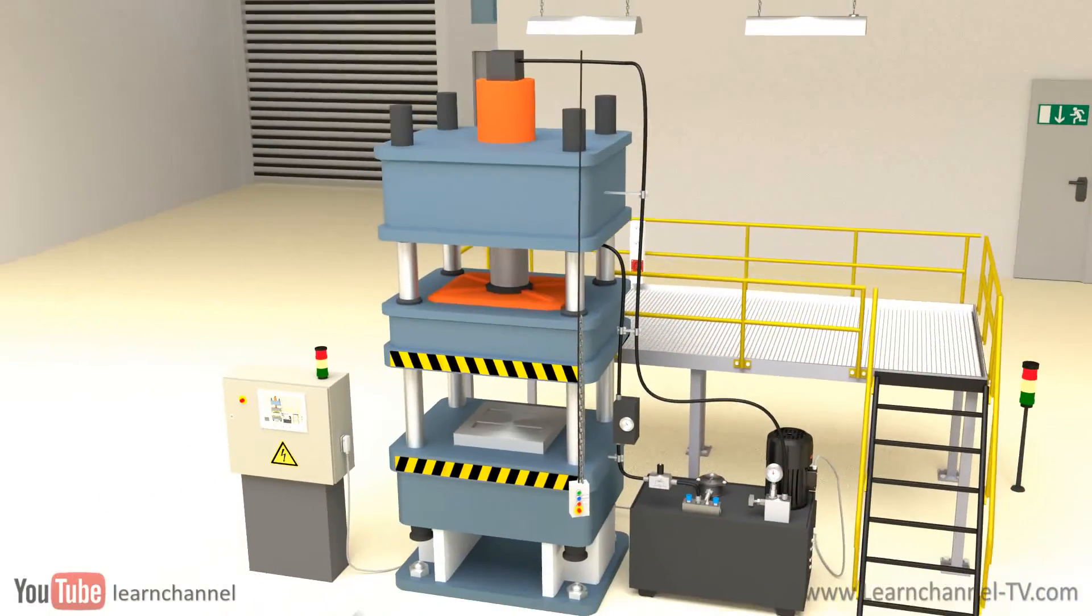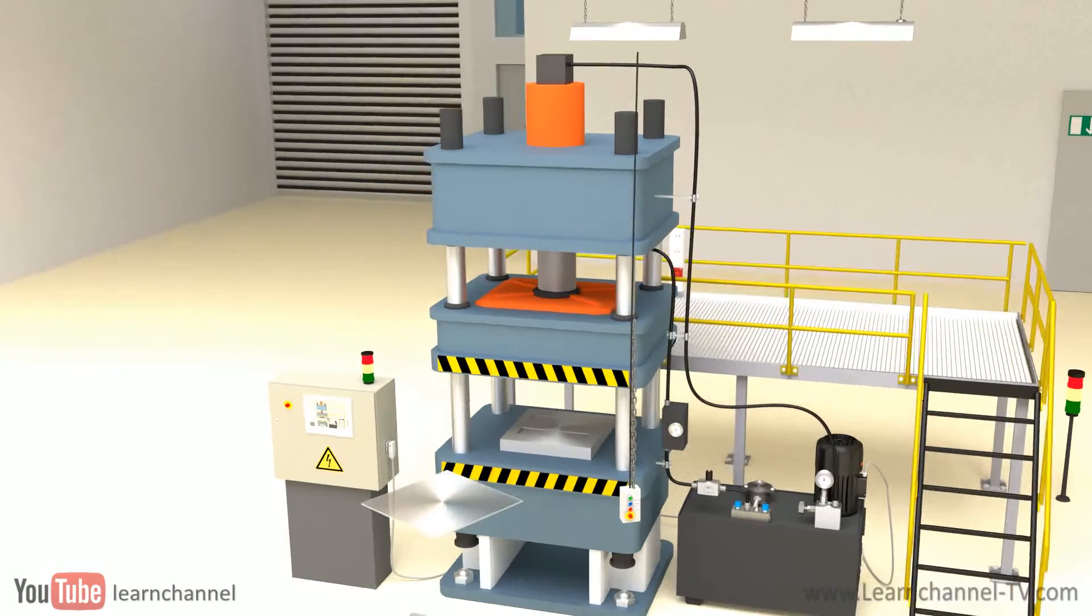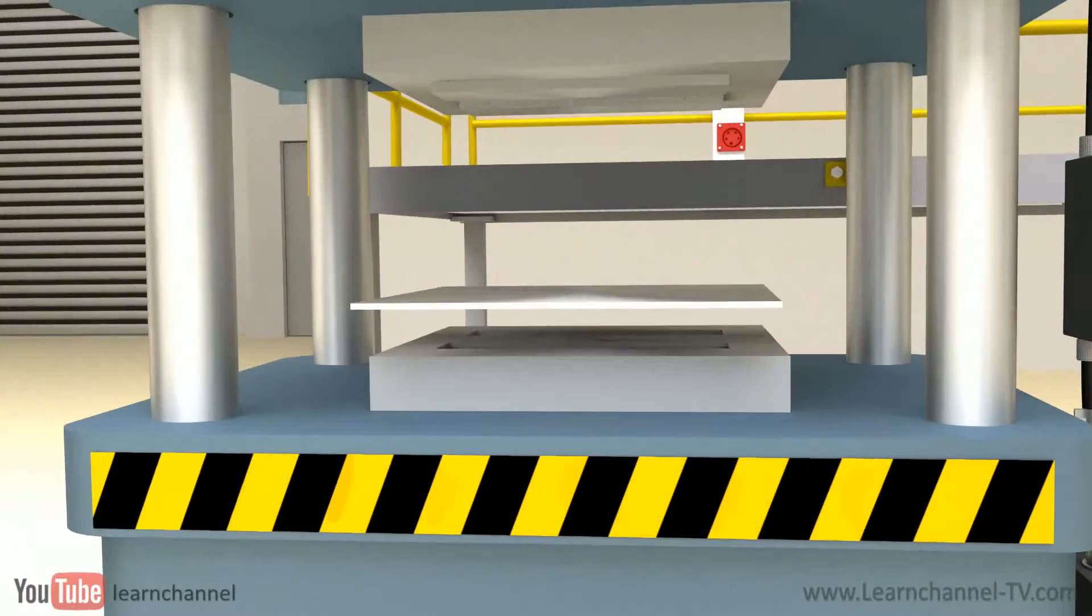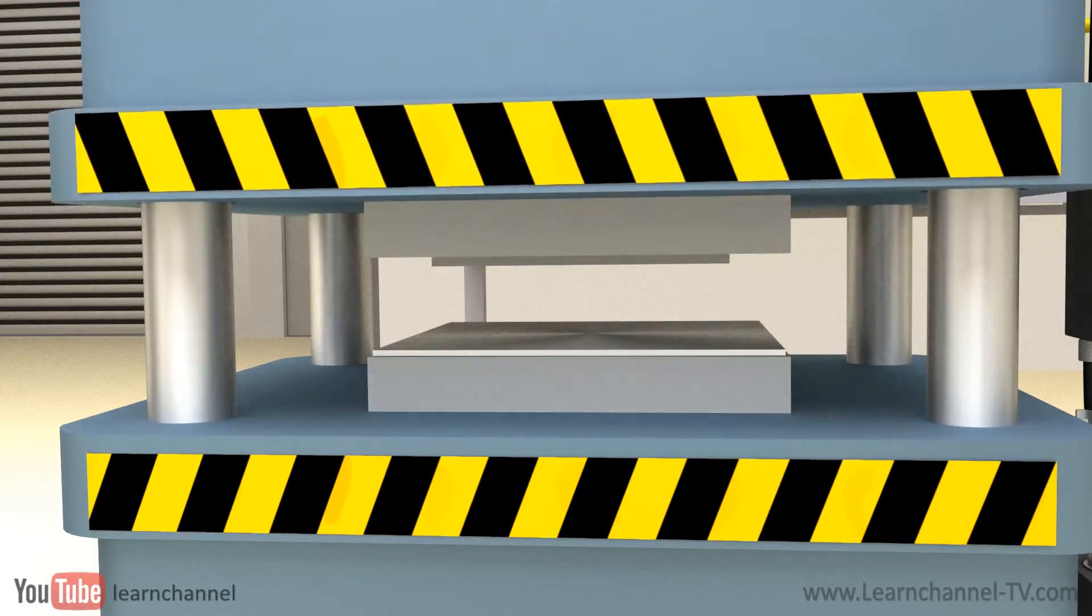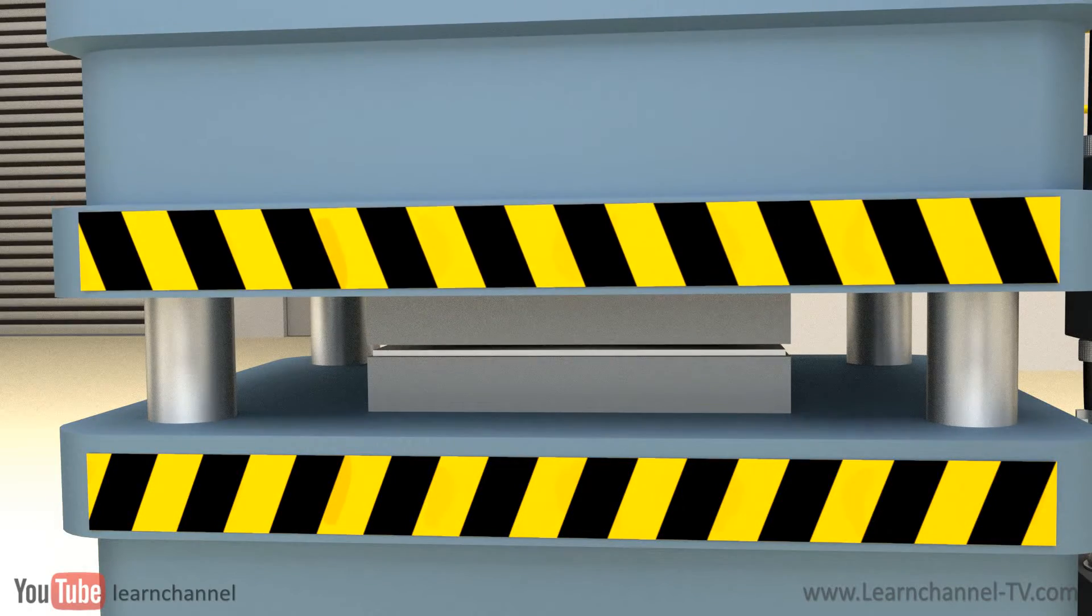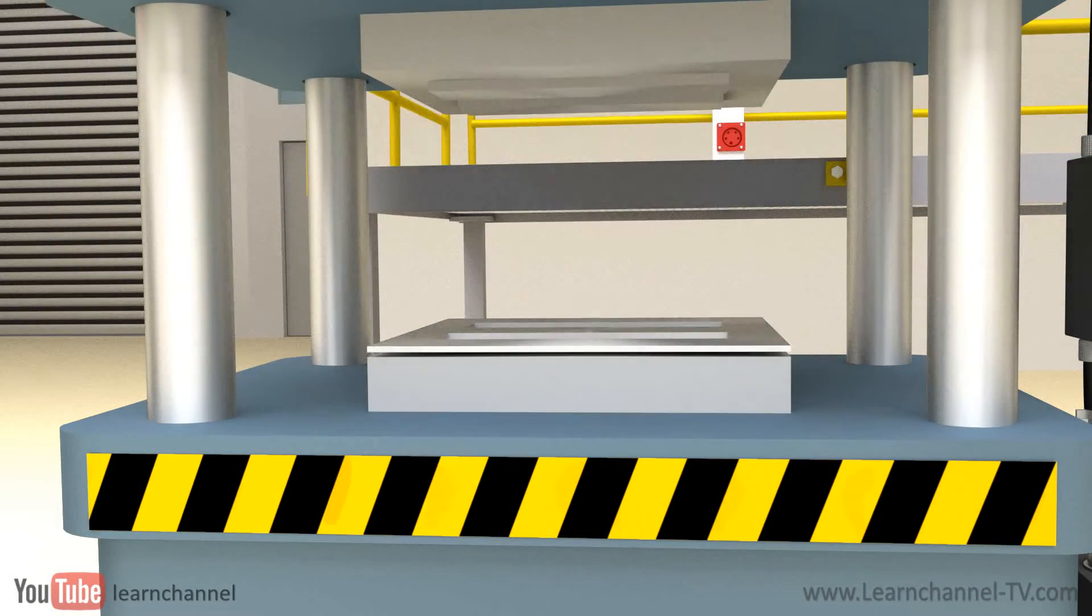In hydraulics, flow control valves are used to control the volume of oil supplied to different parts within a hydraulic system. This way, the speed of a cylinder or the rotational speed of a hydraulic motor can be controlled.